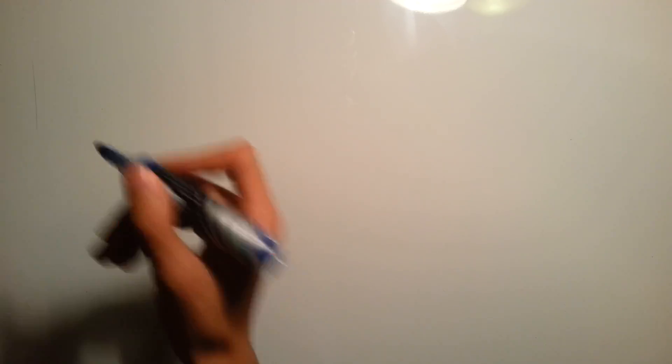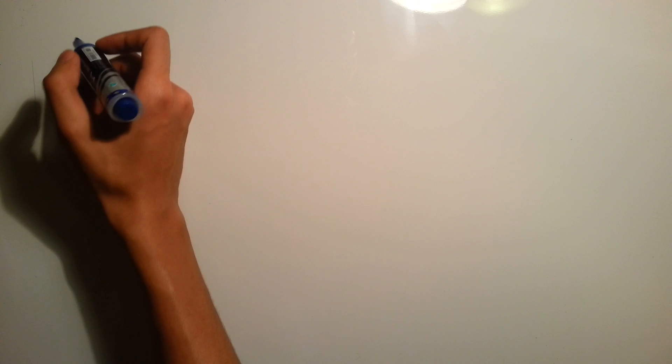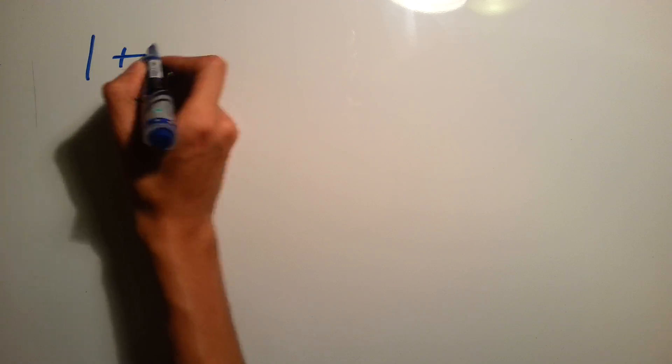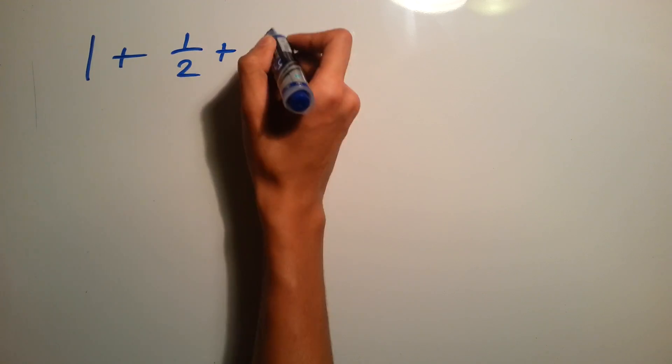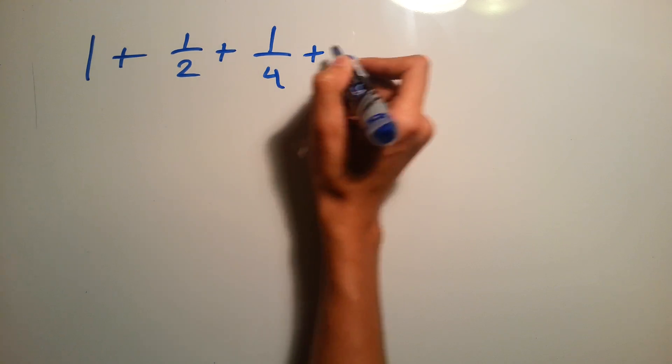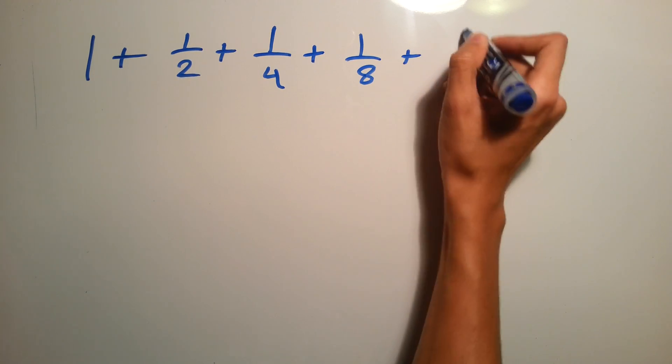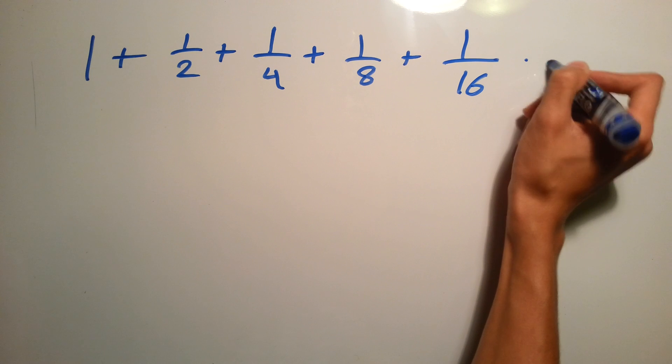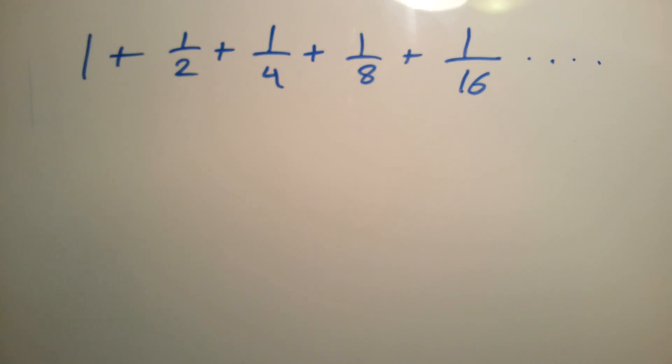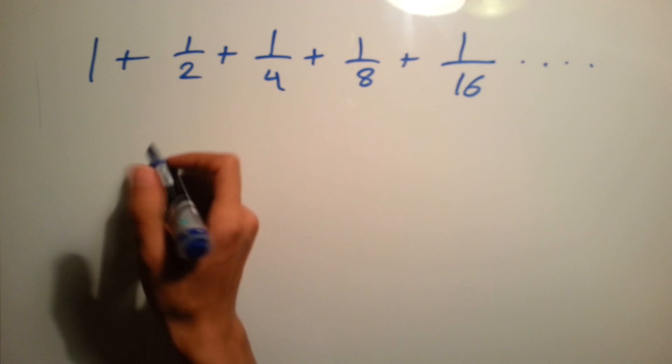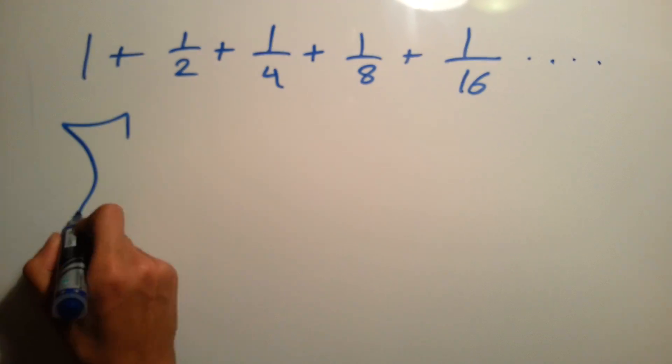So let's first try to figure out what's this type of series. So it's 1 + 1/2 + 1/4 + 1/8 + 1/16 up to infinity. So just by looking you can recognize that it's this type of series.